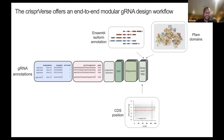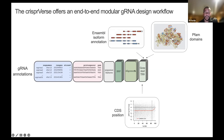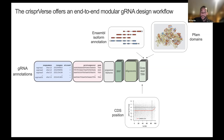We also provide really rich annotations with respect to genomic context and TSS annotation. For each guide RNA, we provide a table of all the isoforms in the Ensembl annotation that are targeted. We also add PFAM domain annotation and where the guide RNA is with respect to the CDS start, because it's known that targeting the first 85% of the CDS leads to more optimal knockouts, so we want to make sure the user knows that.